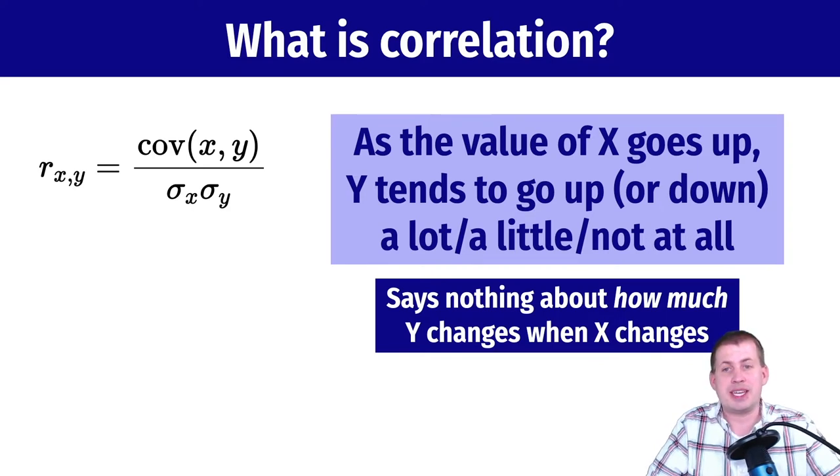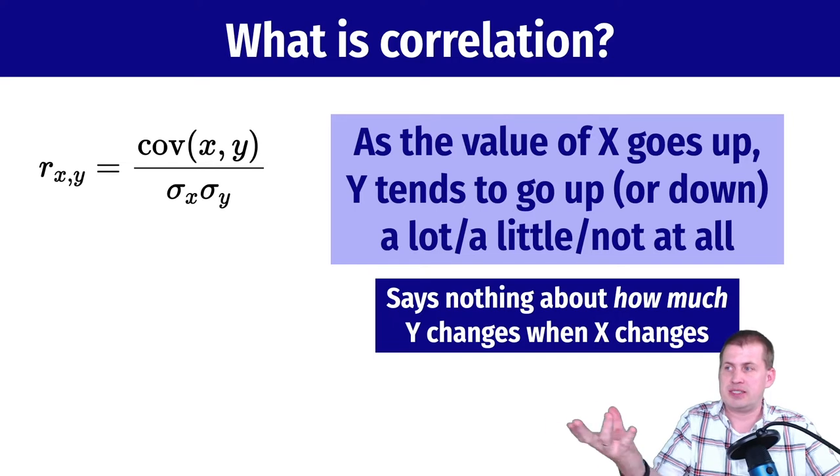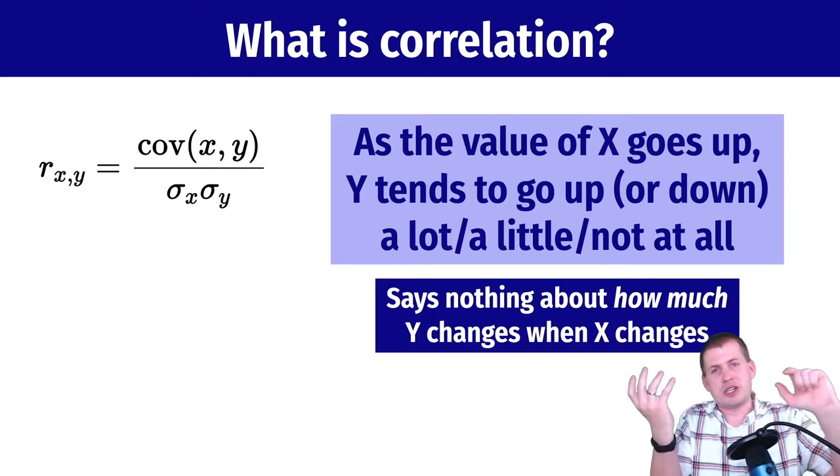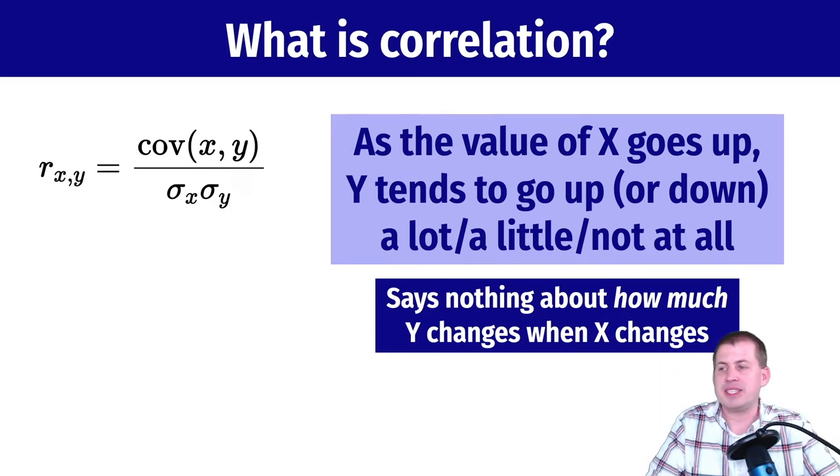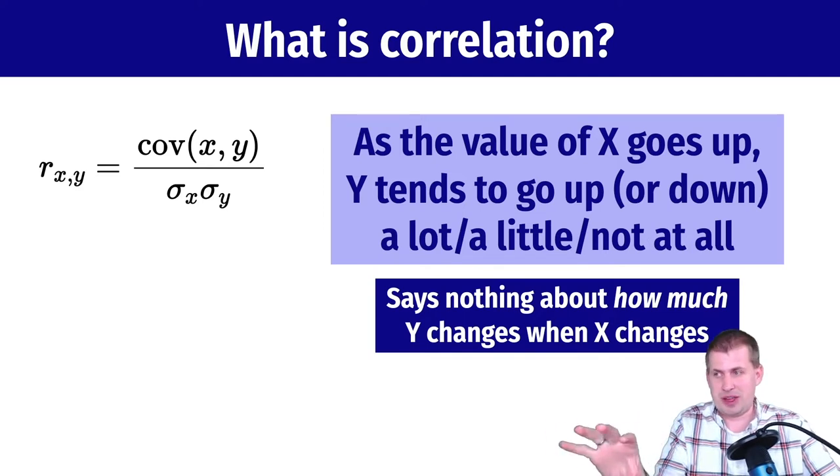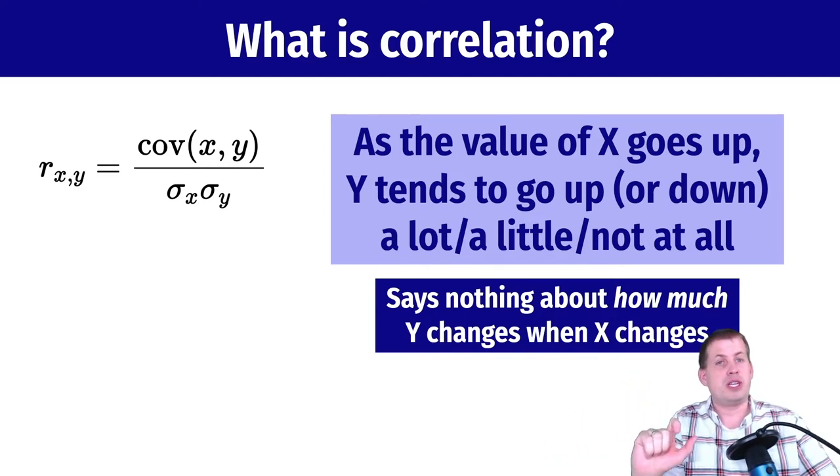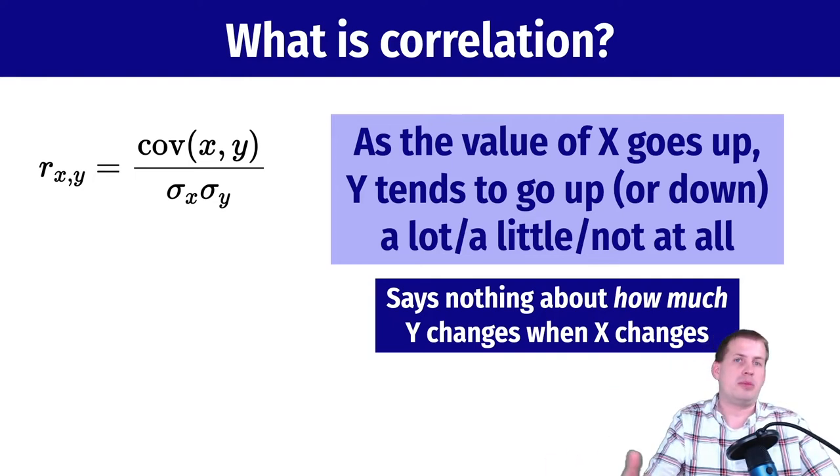You don't need to worry about that formula—it's just the official definition. The thing you need to remember is it's basically a single number that tells you how much two numbers are related. As the value of one goes up, the other one goes up or down a little, or not at all. It doesn't say anything about how much that happens, it just says that it does change. Temperature and humidity, for example, are correlated, but there's nothing in the correlation number that says if humidity goes up by ten percent, what happens to temperature. We just learn how strongly related they are.